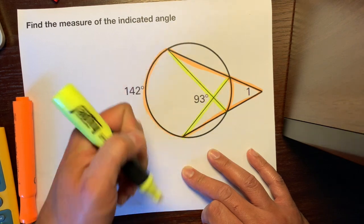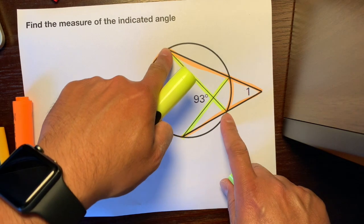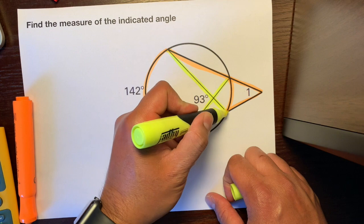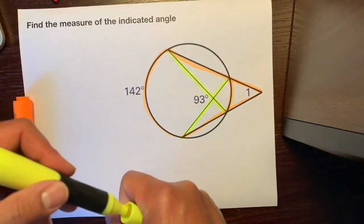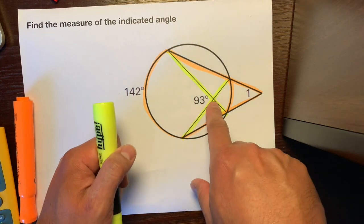If you guys forgot, chords are just lines that start and end on the circle, like a chord for your appliances. It starts on the wall and ends on the appliance, like a vacuum cord.